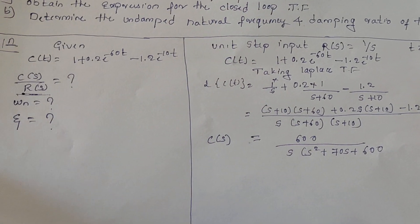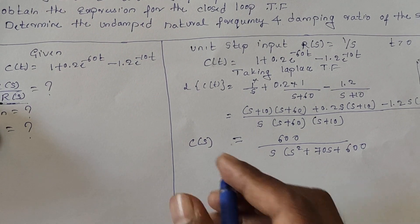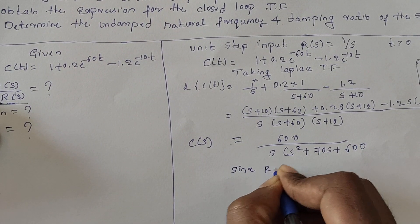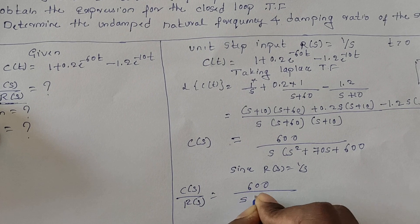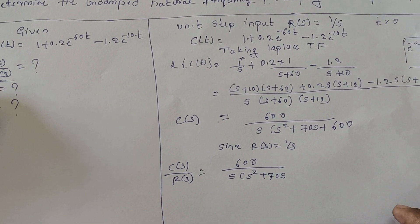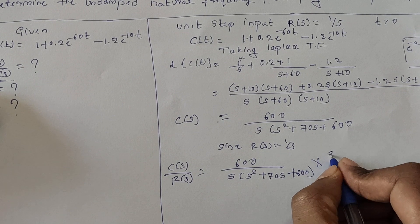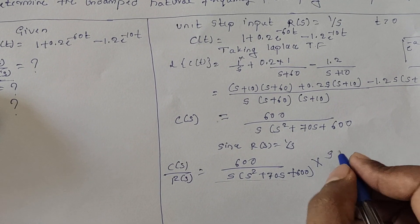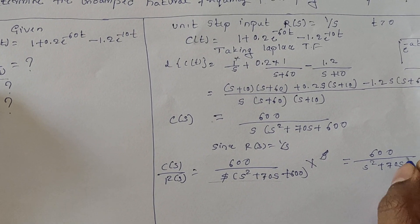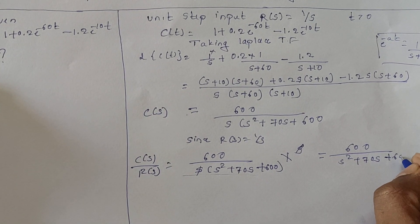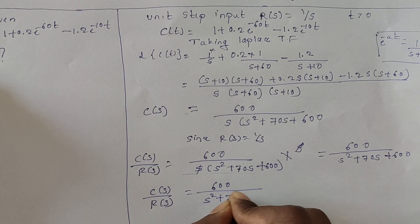To find C(s)/R(s), we divide C(s) by R(s) = 1/s. So C(s)/R(s) = [600 / (s(s² + 70s + 600))] ÷ (1/s). The s terms cancel, giving the closed-loop transfer function: C(s)/R(s) = 600 / (s² + 70s + 600).